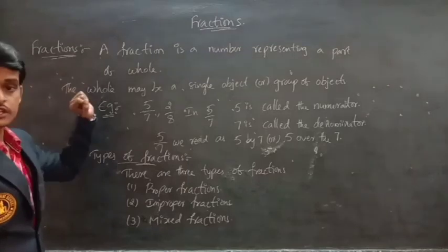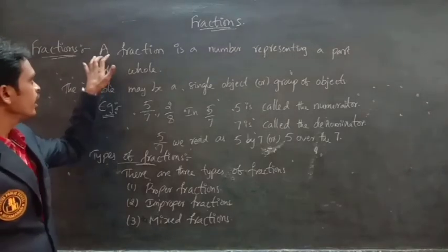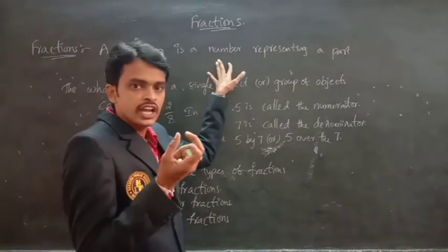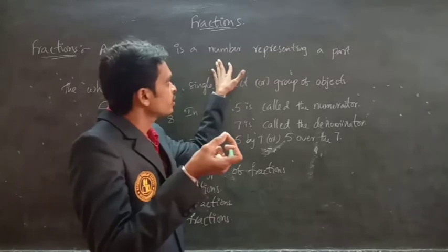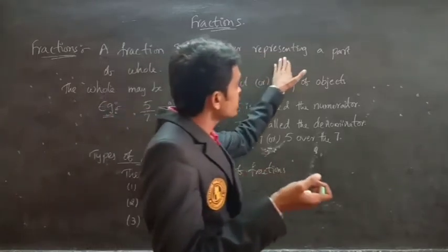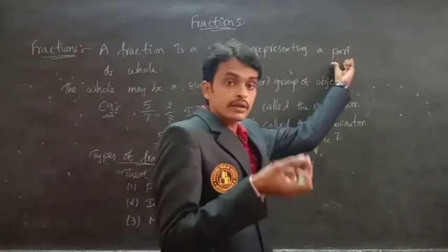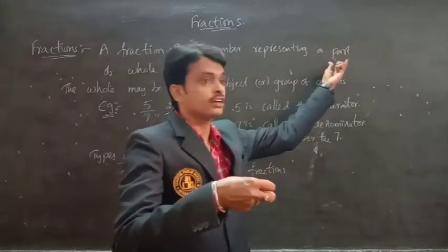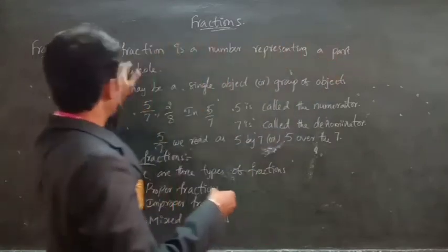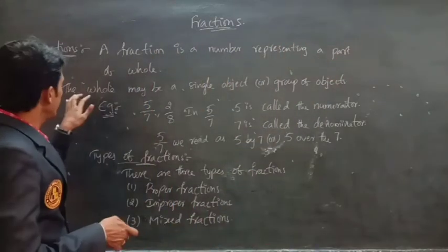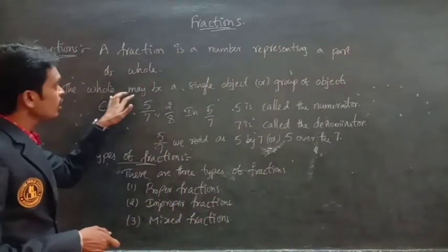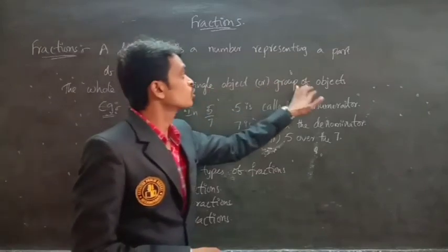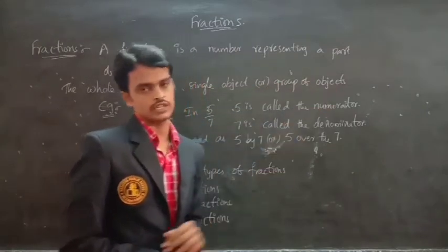Fractions — the definition of a fraction. A fraction is a number representing a part of a whole. Here, the whole may be a single object or a group of objects.